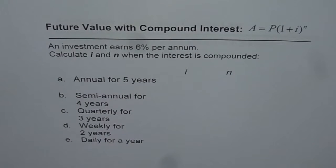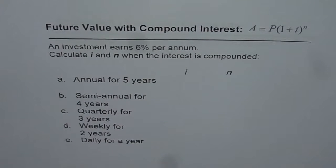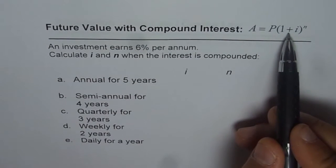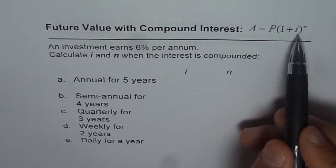Let us try to understand how to apply the compound interest formula to find the future value or the amount. The formula as you know is A equals P times 1 plus i to the power of n.